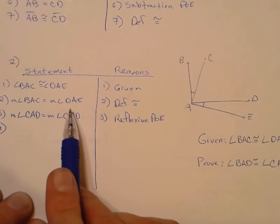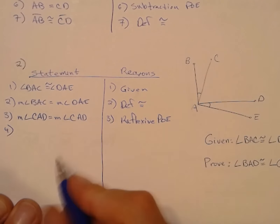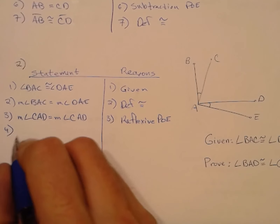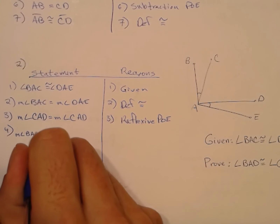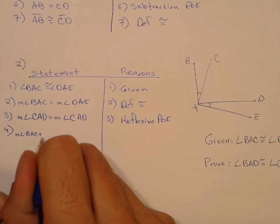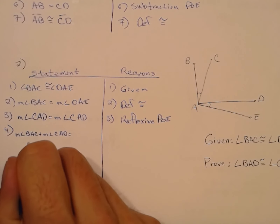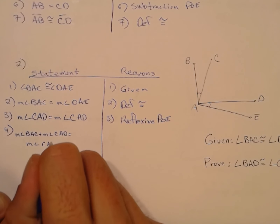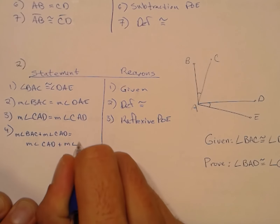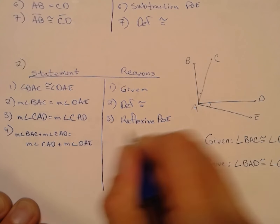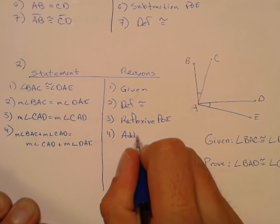Now I can take statement number 2 and add the same thing to both sides of that equation using the addition property of equality: measure of angle BAC plus measure of angle CAD equals the measure of angle CAD plus the measure of angle DAE.